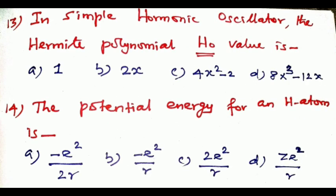Question number thirteen: in the simple harmonic oscillator (SHO), the Hermite polynomial H₀ value and H₁ value are asked. H₀ equals 1, and H₁ equals 2Q. So H₀ = 1 and H₁ = 2Q.